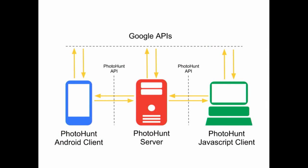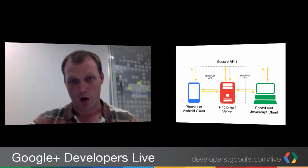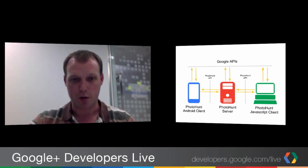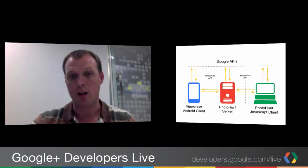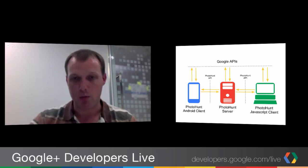If we take a look at the architecture that you get when you set up a PhotoHunt instance, you can see that we get an Android client and a JavaScript client. Each of them authenticates independently with the Google Plus APIs using Google Plus Sign-In, so they can each make direct calls to the Google APIs in their own right — getting the user's profile information, their social graph, and all the things you want to do. They also authenticate with the PhotoHunt server, which is a completely PhotoHunt-specific API. During that process, they will pass over Google credentials, which the PhotoHunt server can then use to make calls to the Google APIs on behalf of the user.